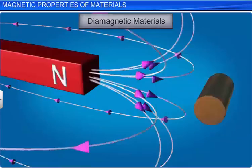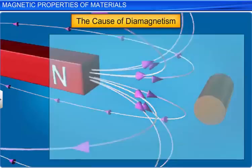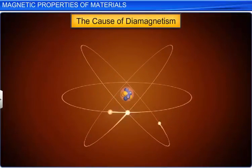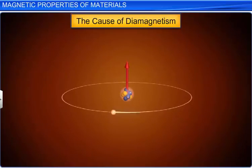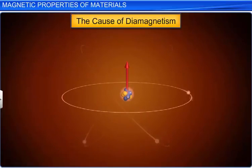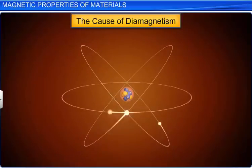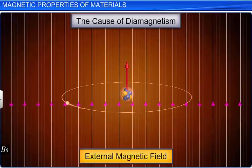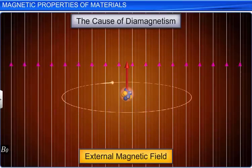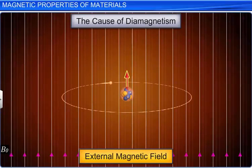Let us discuss the causes of diamagnetism. We know that the orbiting electrons around the nucleus in an atom are equivalent to current carrying loops. These electrons possess an orbital magnetic moment. For a diamagnetic material, the resultant magnetic moment of all the electrons in an atom is zero. When the diamagnetic material is placed in an external magnetic field, due to induced current, the movement of the electrons for which the orbital magnetic moment is in the same direction as that of the external magnetic field is slowed down and the orbital magnetic moment of the electron decreases.